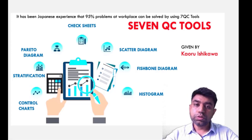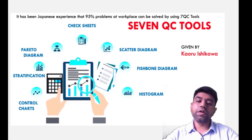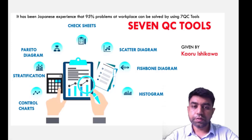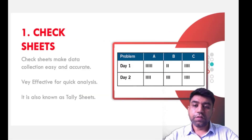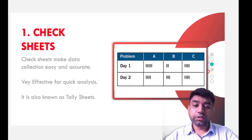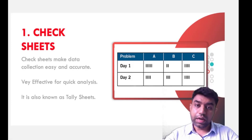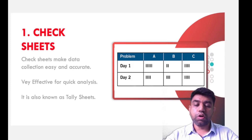These QC tools were basically given by Ishikawa, as we know. The first tool is the check sheet. The check sheet is basically a tool which is a tabular representation of data.